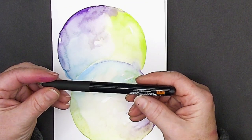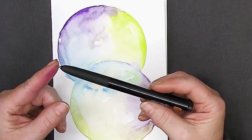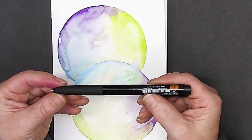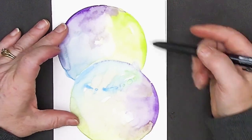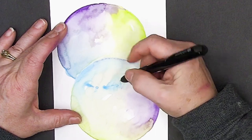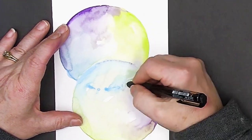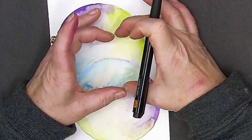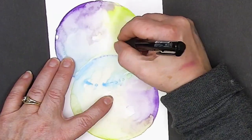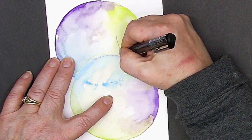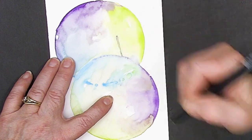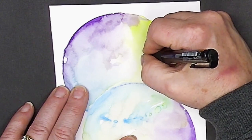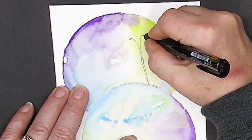This is the Uniball Signo RT1. It is .28 for the tip. And the name of this pen is the UMN 155-28. So it's a very fine point. And I'm going to do a stylized butterfly. So it's not going to be perfect. It's not going to be perfectly symmetrical. And I am looking to see where I want to do it. And I think the butterfly is going to be fairly about this big. I'm going to go ahead and put my body on, which is basically like a giant toothpick or a matchstick. And I'm going to go ahead and put the little antennas in before I do the wings, because I'm living dangerously.